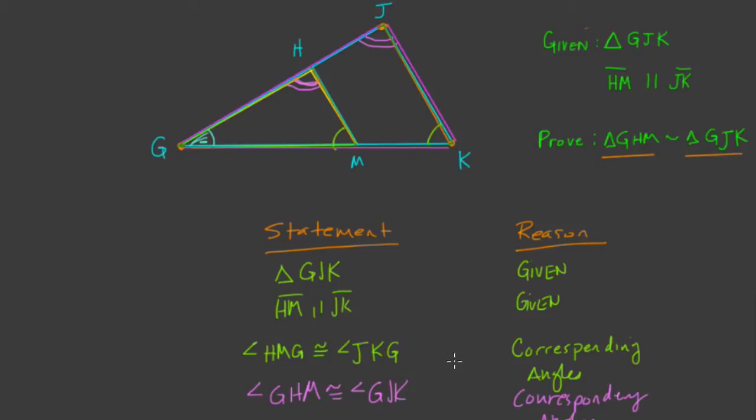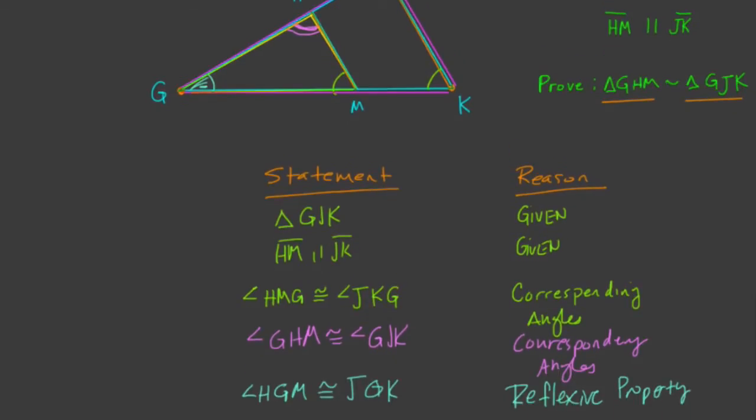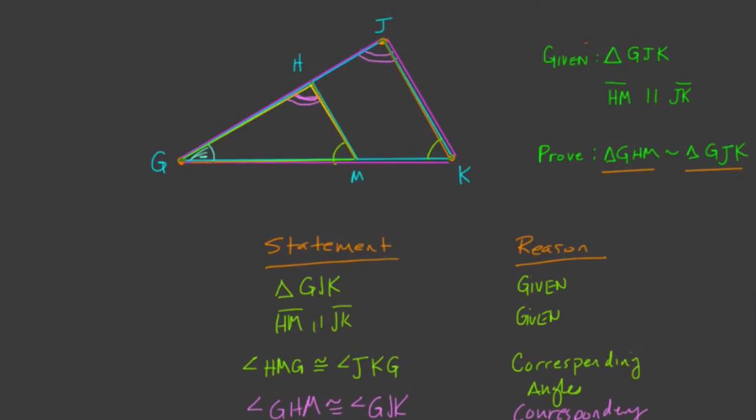And now, since we have three angles equal to each other, we can say that the two triangles are similar. So triangle G, H, M is similar, excuse me, not congruent but similar, to triangle G, J, K. And that is by the angle, angle, angle postulate. Alright, hope that helps. Thank you.